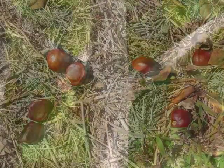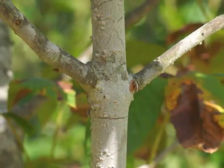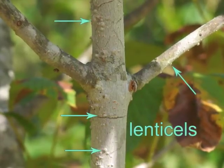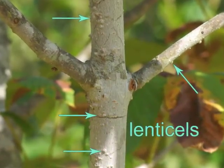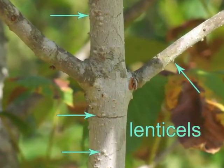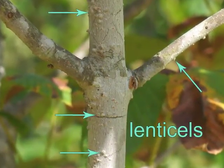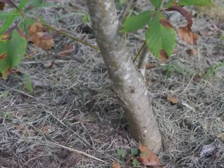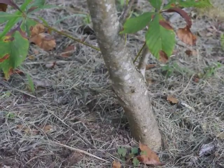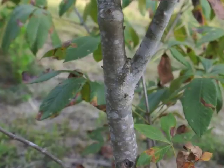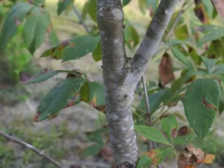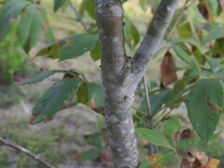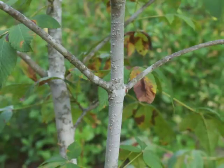Red Buckeye's bark is a light gray color. Raised lenticels are scattered throughout the surface. Looking from the bottom of the tree toward the top, check out the bark — its color, its texture, and the lenticels.